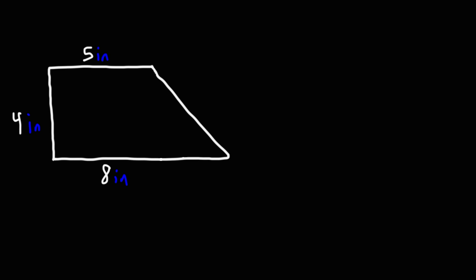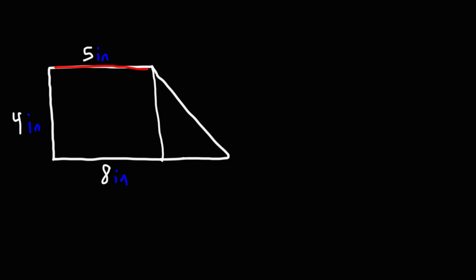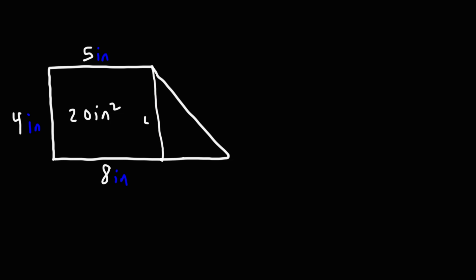Now let's work on this problem — finding the area of this composite figure. I recommend drawing a line right here to separate it into a rectangle and a triangle. To find the area of the rectangle, it's the length of 5 inches times the width of 4 inches. 5 times 4 is 20, so we get 20 square inches. Now let's focus on the triangle — I'll put a 4 here for the height since it matches this side.